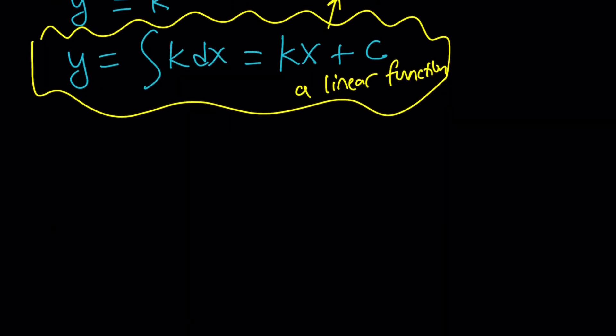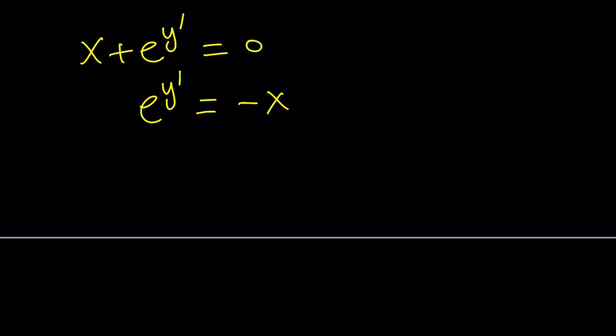So we get x plus e to the y prime equals zero. And from here, what can I do? I can isolate e to the y prime. And then now I'm thinking about this. Now, how can I solve this problem? Right? Y prime is in the exponent. Guess what?